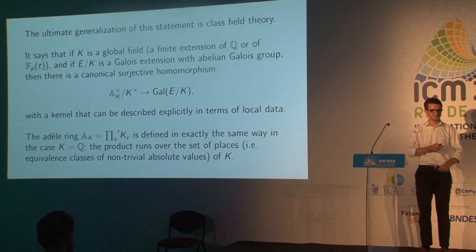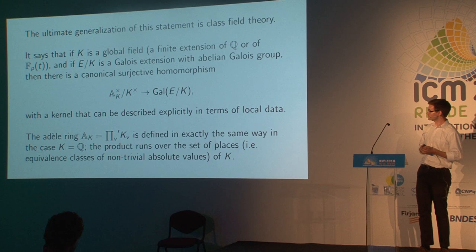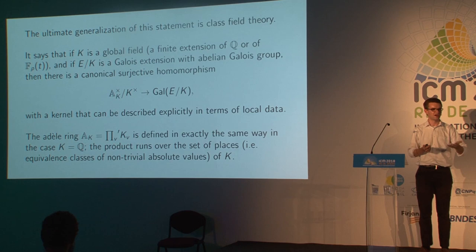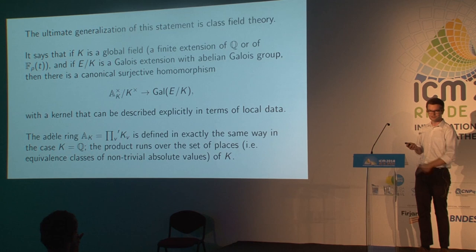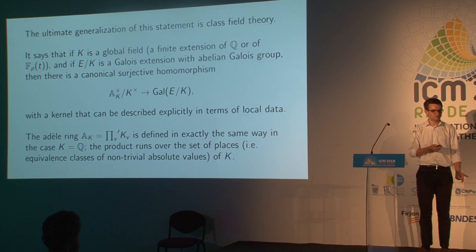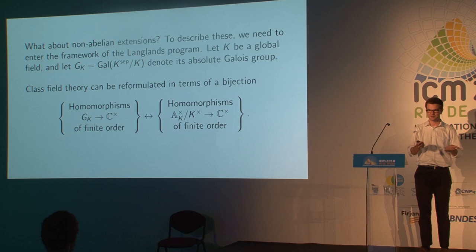The ultimate generalization of this kind of statement is class field theory, which describes not just quadratic extensions of ℚ, but all Galois extensions with abelian Galois group of all global fields. A global field is either a number field — a finite extension of the rationals — or a function field, a finite extension of 𝔽_p((t)). One formulation of class field theory is that whenever you have an abelian extension, you can represent it as a quotient of the Adele class group: the units in A_k modulo the diagonally embedded units in k. Class field theory is one of the greatest achievements of mathematics in the first half of the 20th century. But the natural question is: if you can describe all abelian extensions, what about the non-abelian ones?